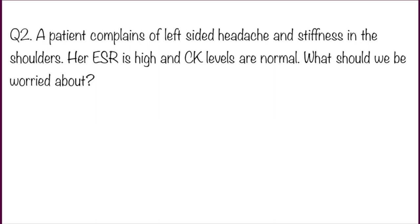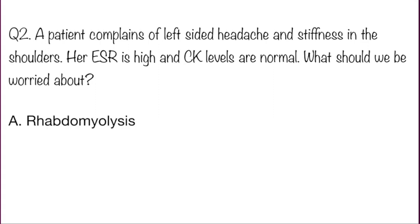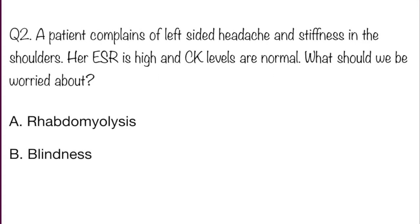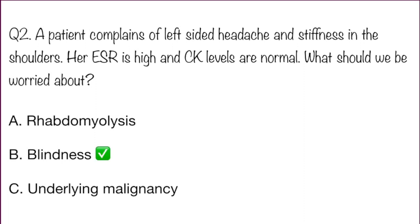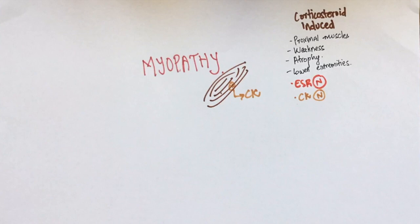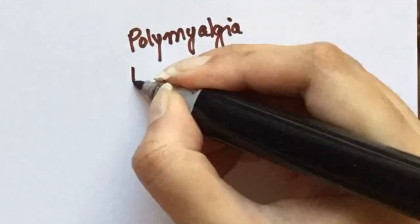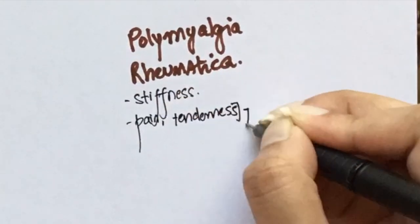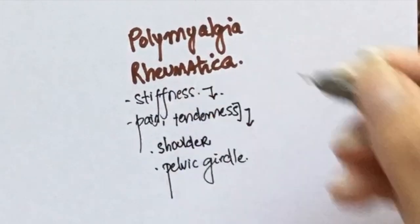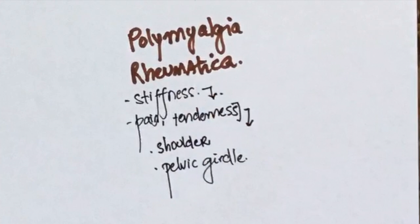Question number two: a patient complains of left-sided headache and stiffness in the shoulders. Her ESR is high and creatinine kinase levels are normal. What should we be worried about? Option A: rhabdomyolysis. Option B: blindness. Option C: underlying malignancy. The answer is blindness. High ESR along with stiffness in the shoulders points towards polymyalgia rheumatica — this condition presents with stiffness and tenderness majorly in the shoulder and pelvic girdle.